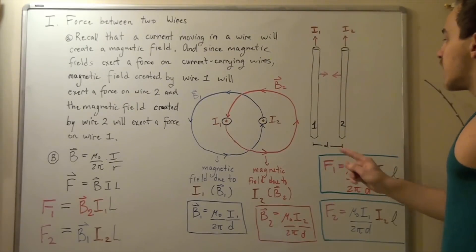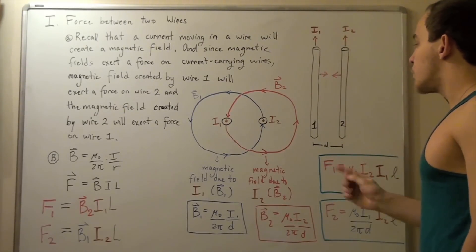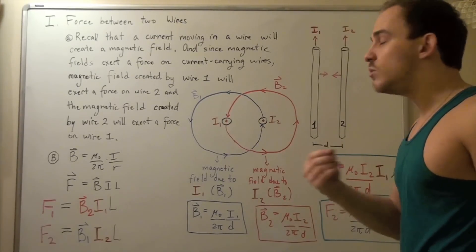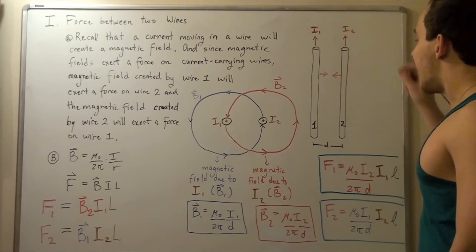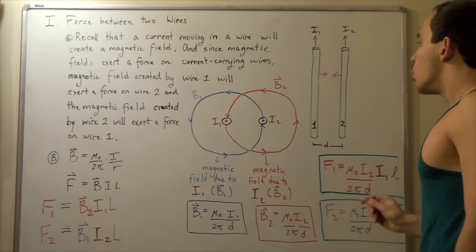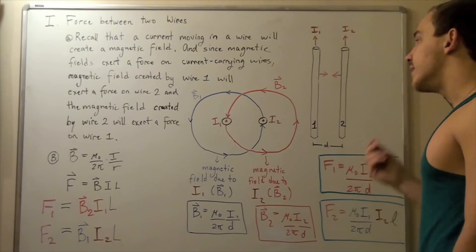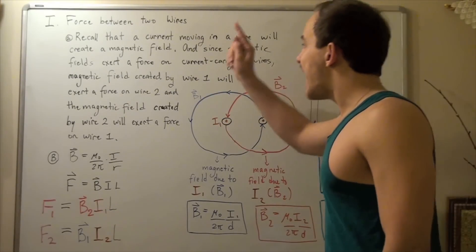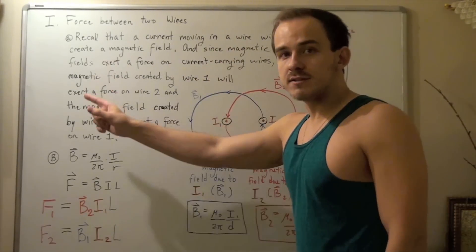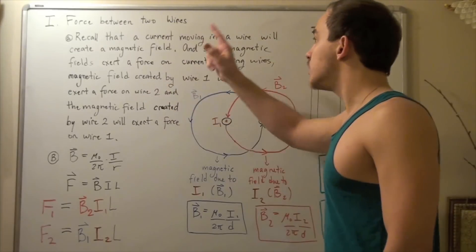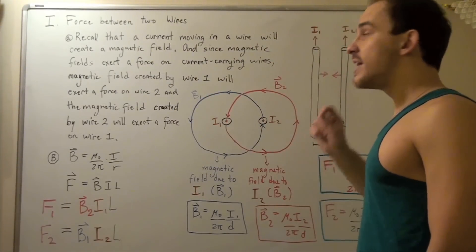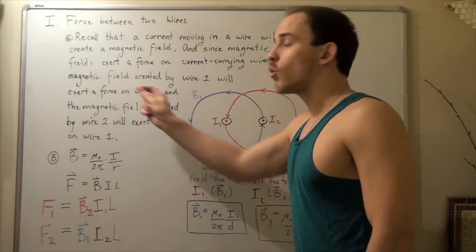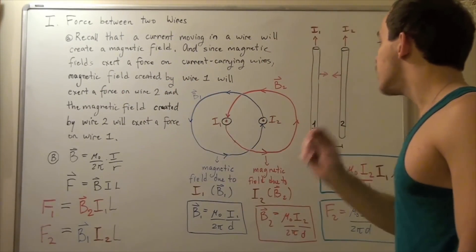In our two-wire setup, the current I1 moving through wire 1 will create a magnetic field — let's call this B1. Likewise, current I2 moving through wire 2 will create a magnetic field — let's call this B2. And since magnetic fields exert a force on current-carrying wires, the magnetic field created by wire 1 will exert a force on wire 2.